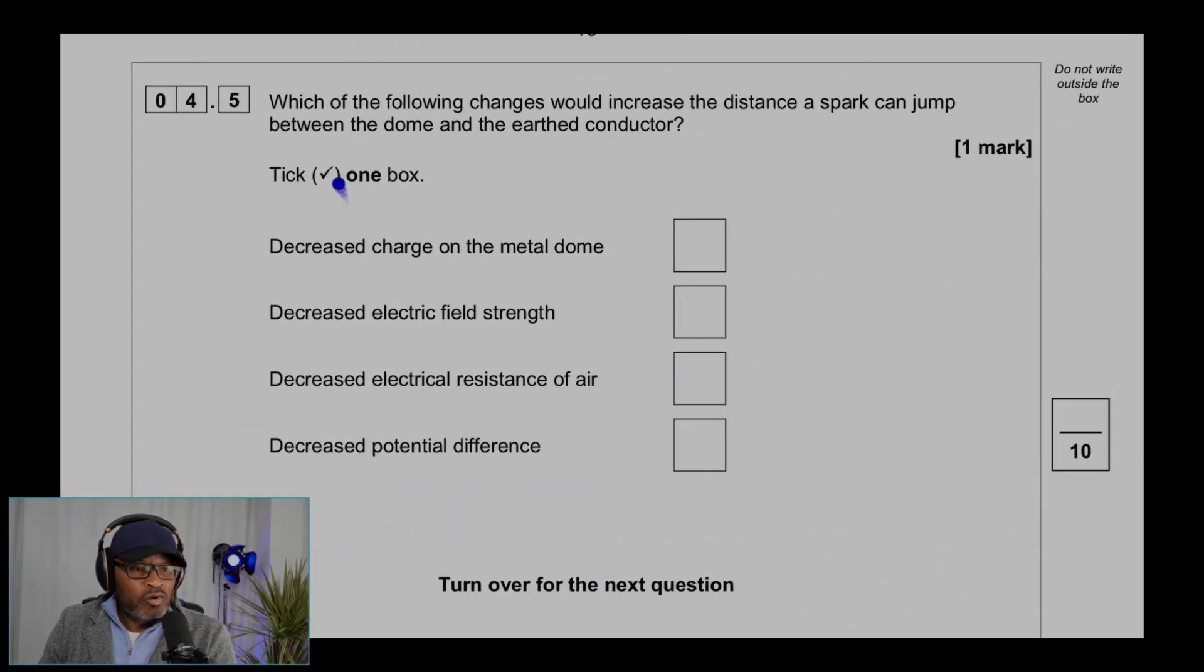Question 4.5. Which of the following changes would increase the distance a spark can jump between the dome and the earthed conductor? The options are: decreased charge on the metal dome, decreased electric field strength, decreased electrical resistance of air, or decreased potential difference. The answer is decreased electrical resistance of air.